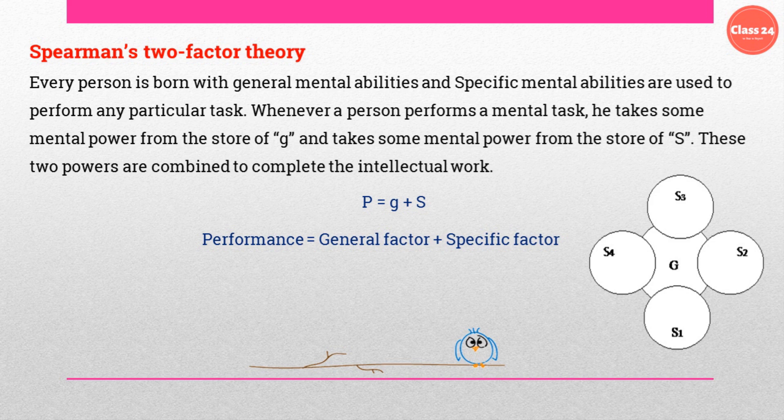Whenever a person performs a mental task, he draws mental power from the store of S, the specific mental ability. These two powers are combined to complete the intellectual task. The mathematical formula depicting this is: Performance (P) equals G plus S. When the general factor and the specific factor are combined, we can perform any type of intellectual activity.